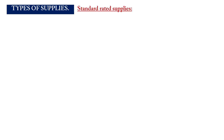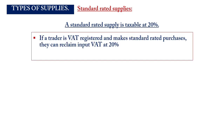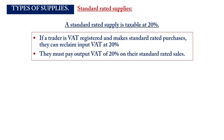The first type of taxable supply that attracts VAT is the standard rated supply. These attract a VAT rate of 20%. If a trader purchases standard rated supplies from a VAT-registered trader, they are charged 20% VAT, which they can claim as an input. If they also sell standard rated goods, they charge 20% on sales, known as the output, which is paid to HMRC.